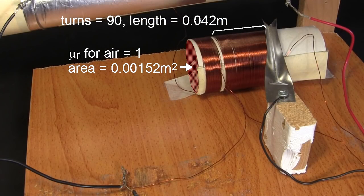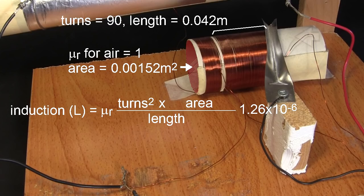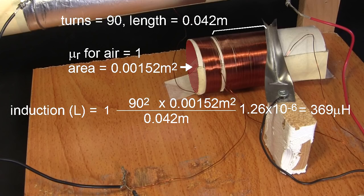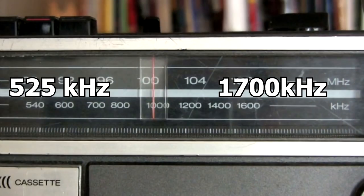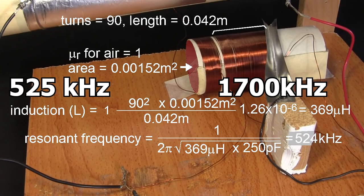For this coil, using the inductance formula with the wiper blade out here so that we're using the full coil, the inductance is 369 microhenries. Plugging that and the 250 picofarad capacitance into the resonance frequency formula, we get that this parallel LC circuit will resonate at 524 kilohertz. Remember, we want to be able to adjust for a range of 525 kilohertz to 1700 kilohertz, so that handles the bottom end of the range.